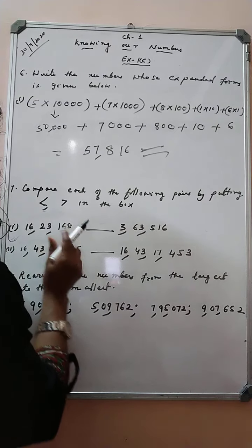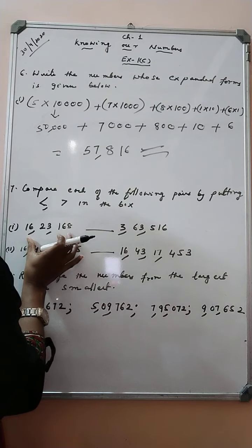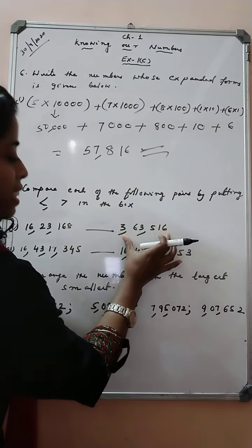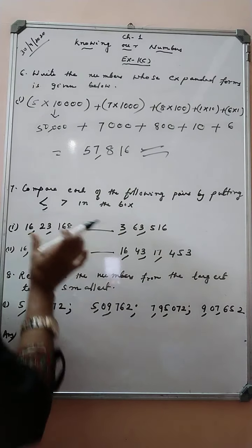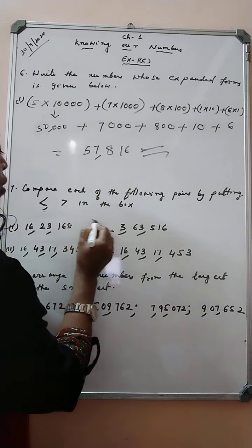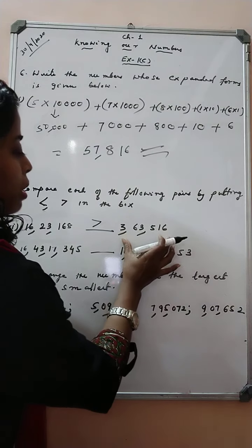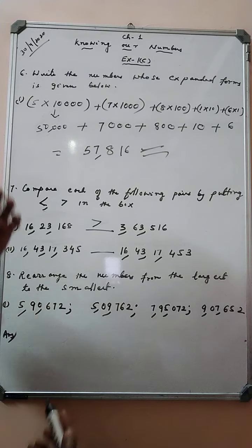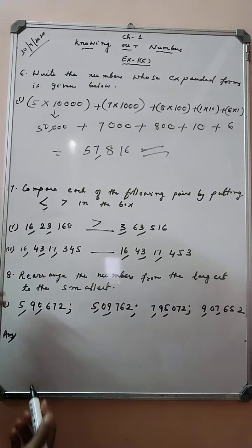Here we have 7 digits of number. Here we have 6 digits in this number. So, definitely the number with 7 digits will be greater than the number with 6 digits. Now, let us see the next question.